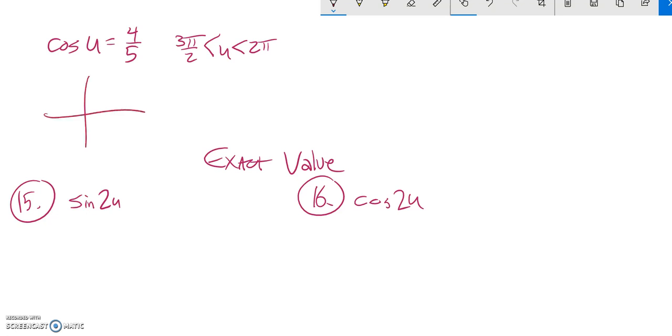So that means this must be somewhere in this fourth quadrant. So U is an angle that goes around like that. Cosine of it is 4 fifths, so that means the X value is 4, the radius is 5. So we can just figure out what that height is.